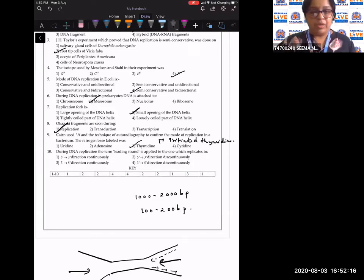During DNA replication, the term leading strand is applied to one which replicates in five dash to three dash. Always polymerization will be in five dash to three dash whether it is the leading strand or the lagging strand. But the difference is that the leading strand is synthesized continuously and the lagging strand is synthesized discontinuously.